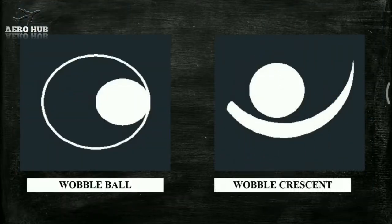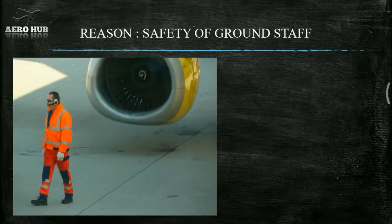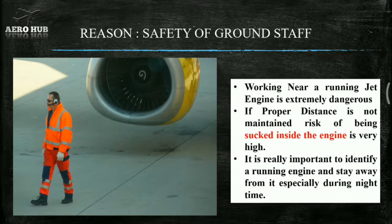The hurricane design is being used by Philippine Airlines. Now let's examine the reason behind the use of spiral design. The main reason behind the use of spirals or swirls on the engine is for the safety of ground staff. Working near a running jet engine is extremely dangerous. If proper distance is not maintained, the risk of being sucked inside the engine is very high. Ground staff will be wearing hearing protection while working nearby aircraft. It is easy to identify a running engine during the daytime, but during nighttime it is very difficult to predict a running engine. It is really important to identify a running engine and stay away from it, especially during nighttime.